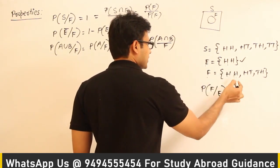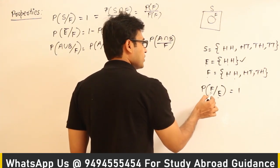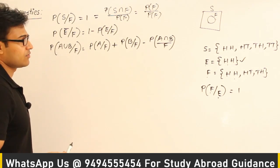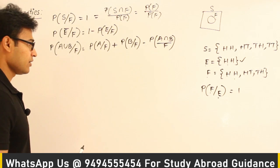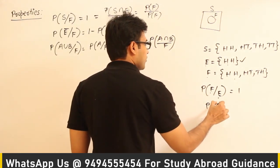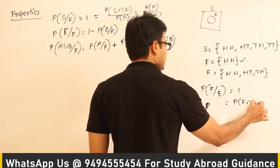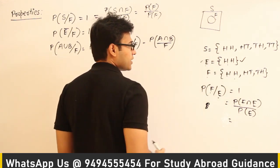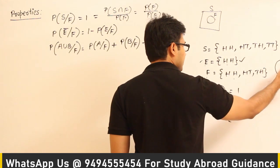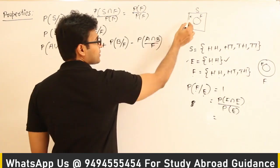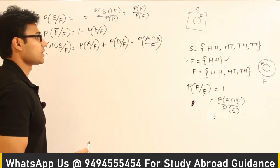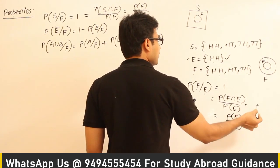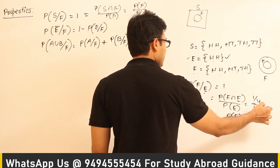E is an event that both of them are heads. F is an event that at least one of them is head. What is the probability that at least one of them is going to be head, given that both of them are heads? If both of them are heads, then definitely at least one of them is heads. If you want to go with the formula, P of F given E is P of F intersection E divided by P of E. The intersection is E itself because E is present inside F — just like F is present inside S. So P of F intersection E equals P of E divided by P of E, or you can test it: it is 1/4 divided by 1/4, which equals 1. That is how sometimes we get 1 in conditional probability.